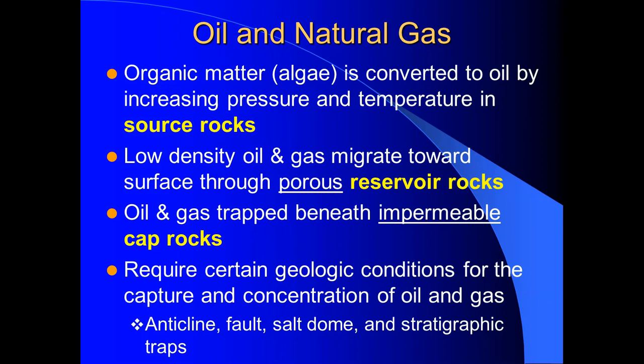For oil and natural gas to become trapped and concentrated, we need the right geologic conditions — what are called oil and natural gas traps. There are four types: an anticline trap, a fault trap, a salt dome trap, and a stratigraphic trap. These are just the right geologic conditions to trap and concentrate pockets of oil and natural gas in the subsurface.